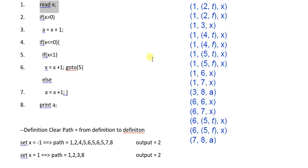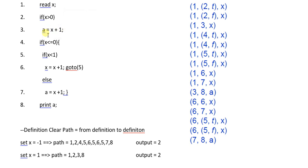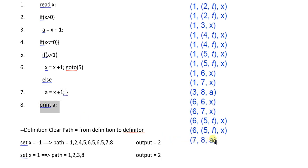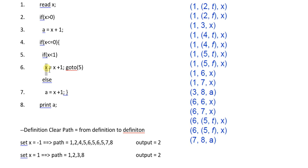Next we see the associations for the definition made at line number three, where we define variable a. Variable a is used only at line number eight — a computation use, since we are printing the value of a. So we write: definition at line three, use at line eight for variable a. Similarly, the definition of a at line number seven has usage at line number eight.